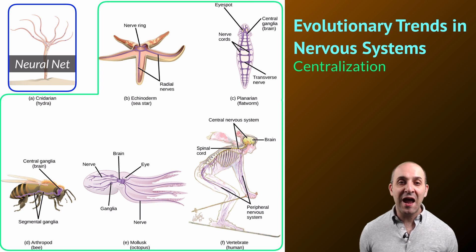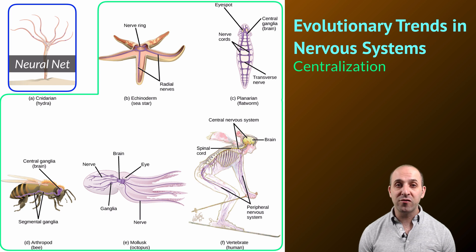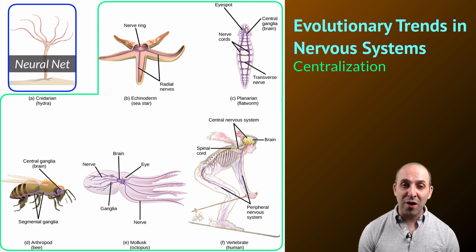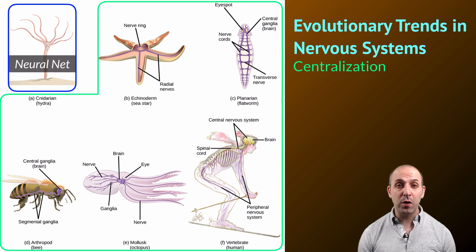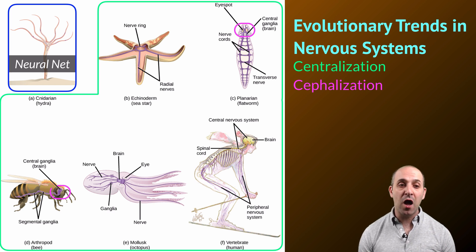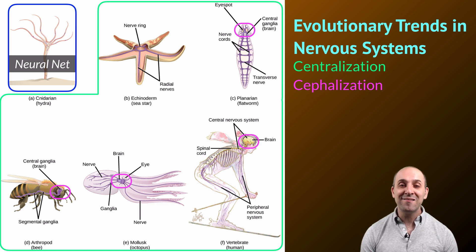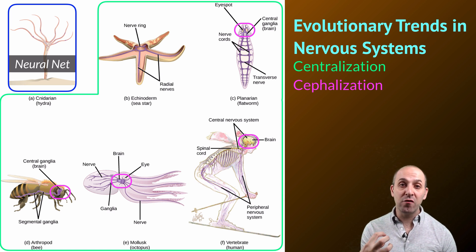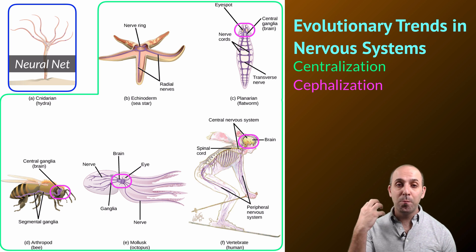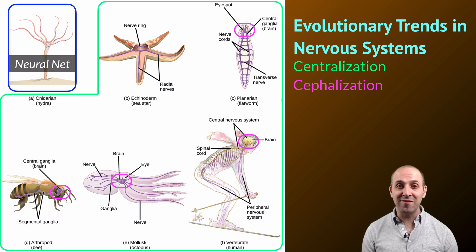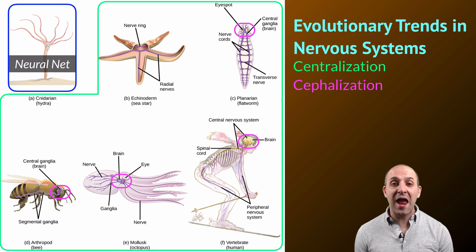Every one of these other organisms has some version of a central nervous system — a way in which neurons all feed into a central processing region, though not all of them have structures we would generally consider to be brains. The other trend we see is toward cephalization: the concentration of sensory organs and the main part of the central nervous system, the brain, within a body region we call the head. That's what cephalization means — it's literally the headification of animals.